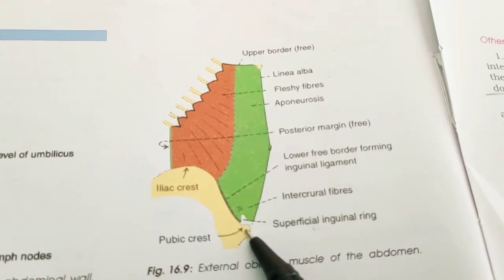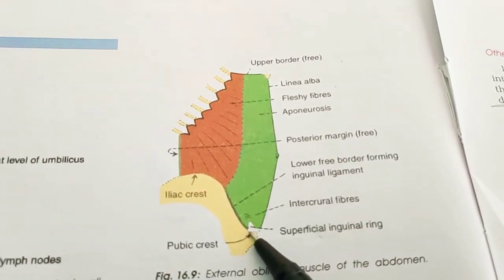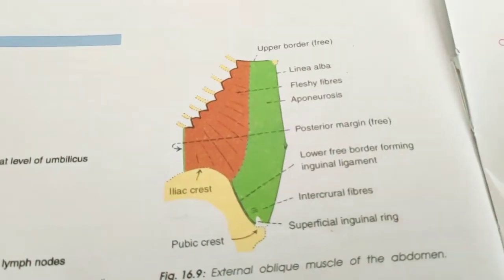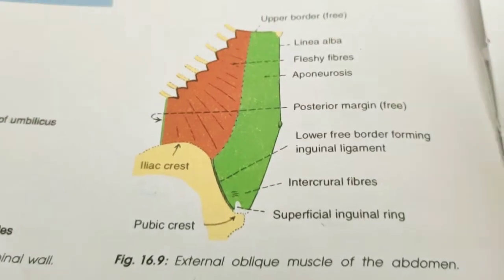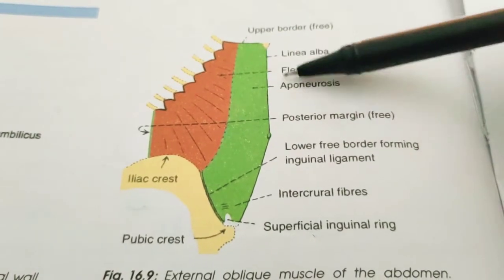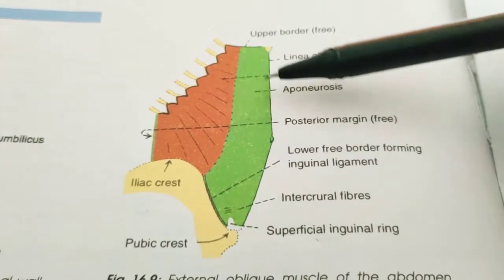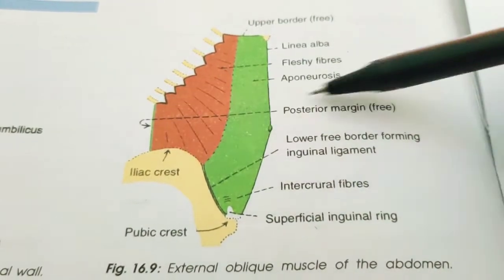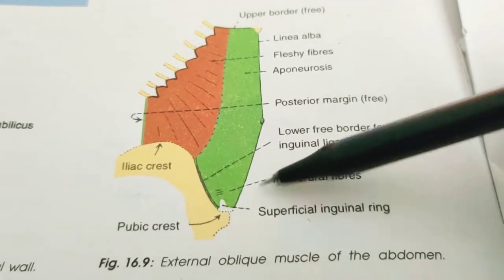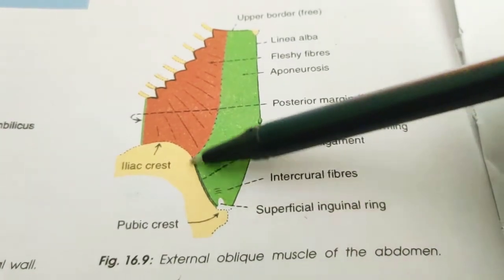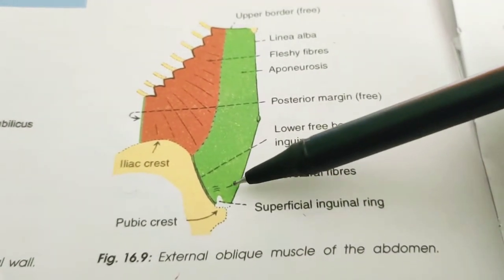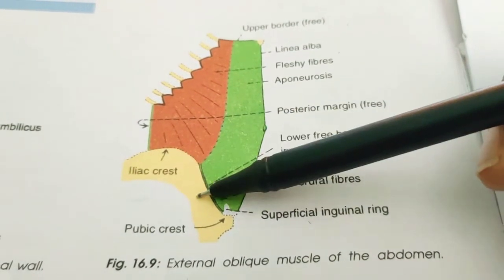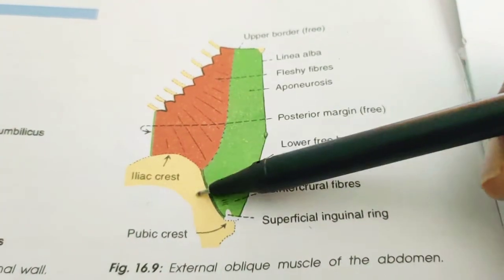The muscle also has free posterior and upper borders. Let us revise the diagram once again. You can see the external oblique muscle with its upper free border, the linea alba, the fleshy fibers of the muscle, and the green color representing the aponeurosis of the external oblique. This is the posterior margin which is free, and this is the lower free border which forms the inguinal ligament. You can also see the intercural fibers and the superficial inguinal ring just above the pubic crest.